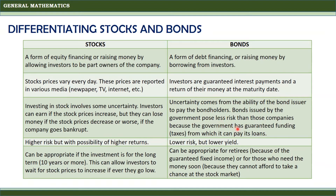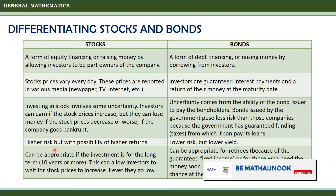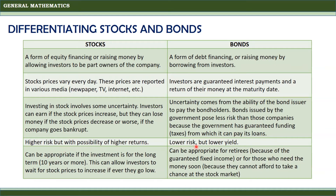Unlike in bonds, uncertainty comes from the ability of the bond issuer to pay the bond holders. Bonds issued by the government pose less risk than those of companies, because the government has guaranteed funding like taxes from which it can pay its loans. Stocks have higher risk but with the possibility of higher returns; bonds, on the other hand, have lower risk but lower yield.